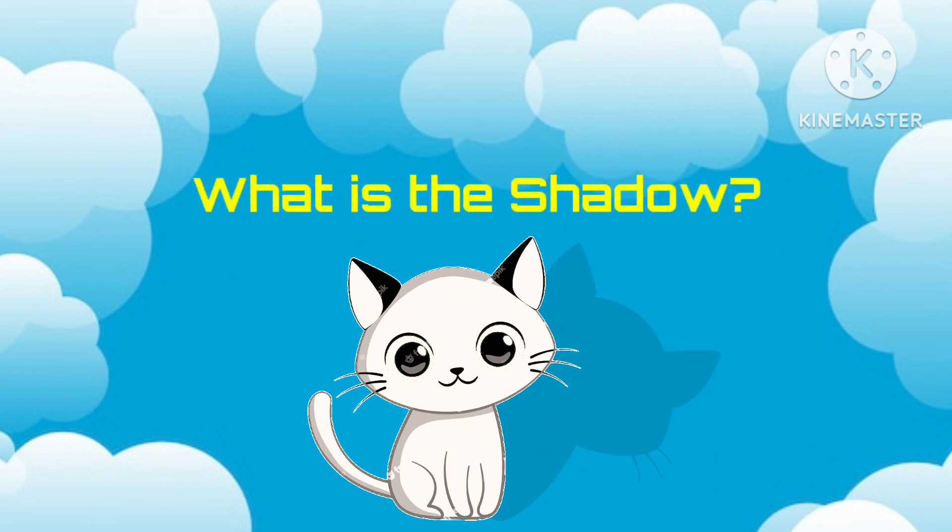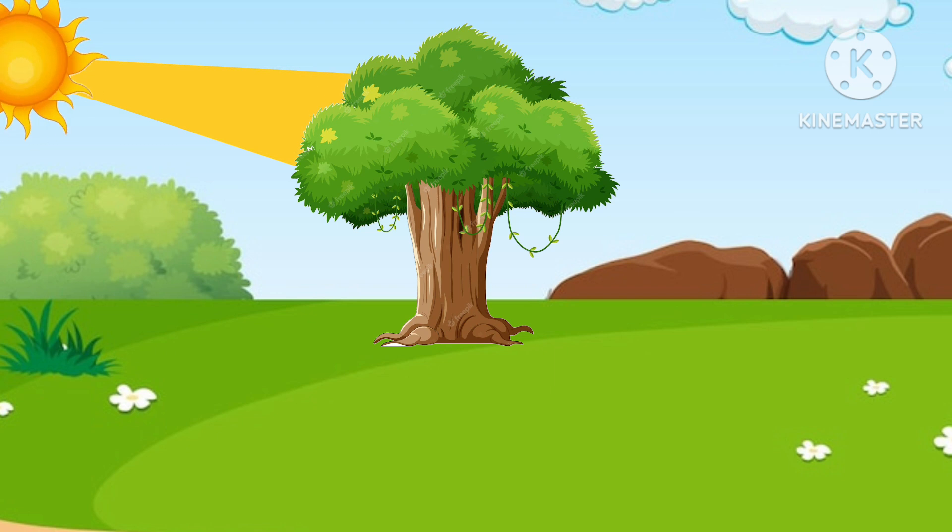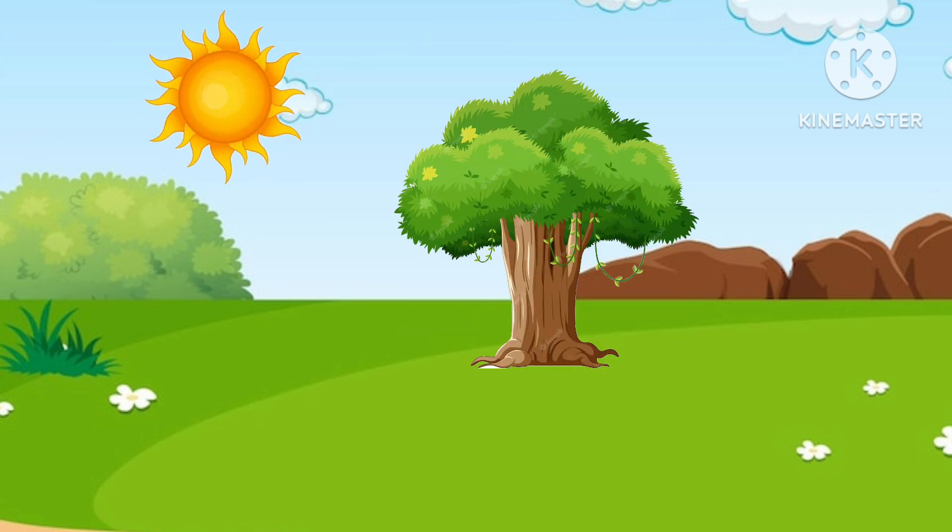Now let's see what is shadow. When a ray of light falls on an opaque object, a dark patch is formed on the other side of the object. This is known as shadow. Three things are required for the formation of shadow: a source of light, opaque object, and a screen.